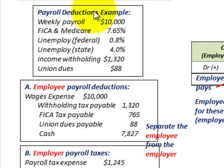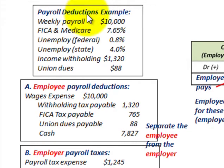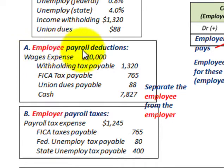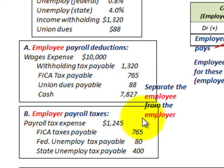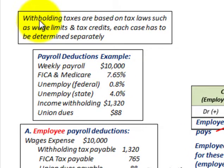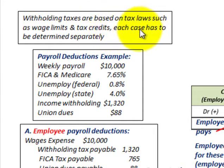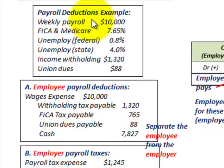We're going to go through a basic example on payroll deductions. We need to determine what the employee's payroll deductions would be and also what the employer's payroll taxes would be. The key is to separate the employee from the employer on what each would be paying. Note that withholding taxes are based on tax laws such as wage limits, wage credits, and tax credits — it can be complex, so each case must be determined separately.